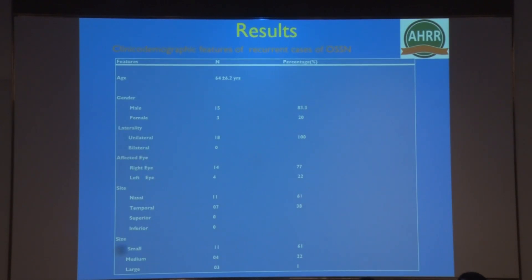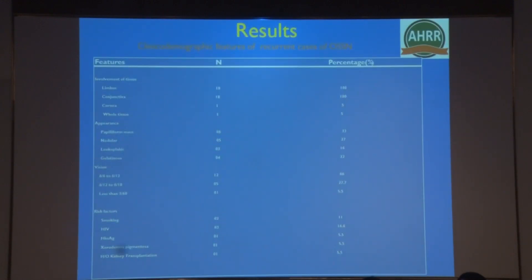The mean age of the study population was 64 years. There were 15 male and three female patients. Most patients had unilateral presentation — the right eye was involved in 14 patients and the left eye in four. The common site involved was the nasal quadrant, and the common tumor size was less than five millimeters. Common tissues involved were the limbus and conjunctiva. The common clinical presentation was a papilliform mass, and most patients had vision from 6/6 to 6/12. Common associations noted were smoking, HIV, HBsAg, and xeroderma pigmentosum.